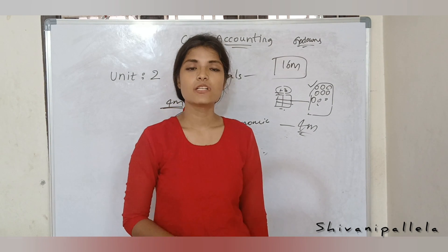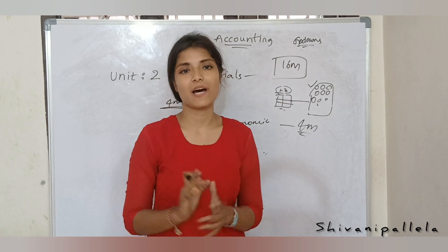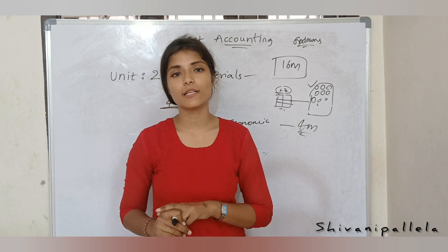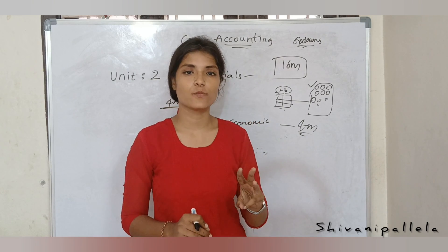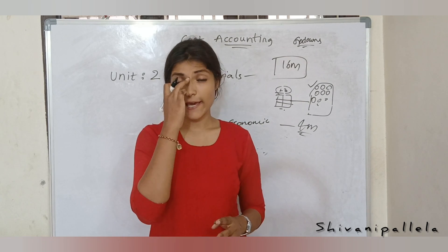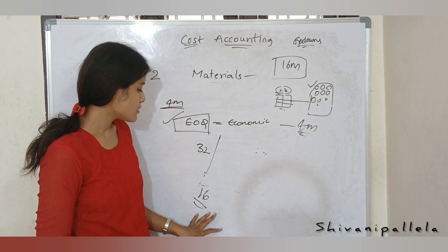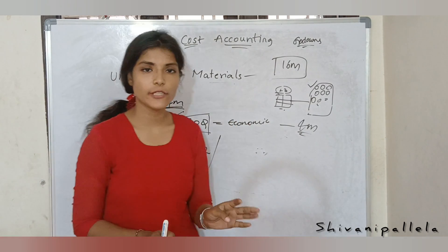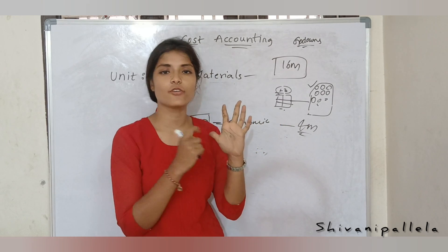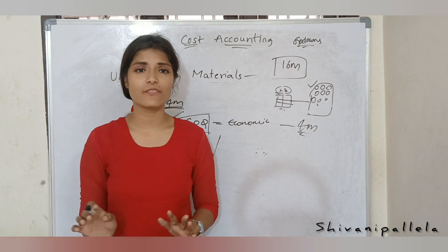Unit number 1 is a theory unit, so if you are perfectly prepared in unit number 1 and unit number 2, you can definitely pass the cost accounting subject. However, my suggestion to you all is that minimum 3 units you need to be perfect to get passing marks, since we can't know how the evaluator is correcting your paper. So learn LIFO, FIFO, weighted, simple average for 12 marks, and EOQ and stock levels for 4 marks — these 6 methods are easy and you can finish them off.